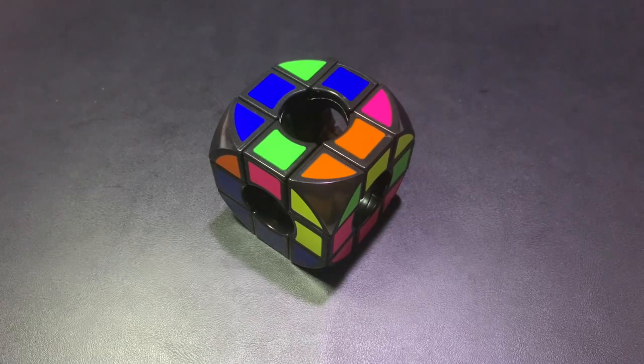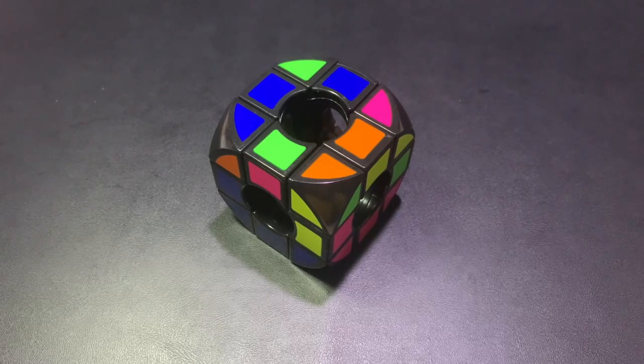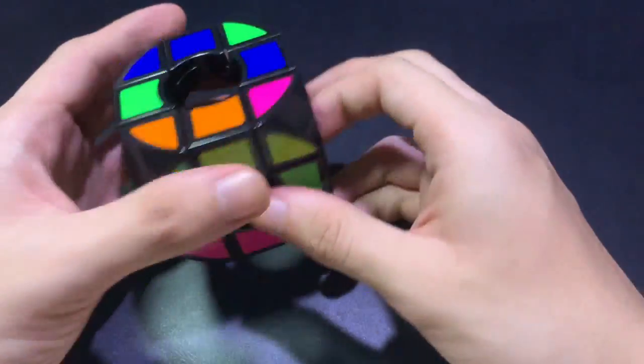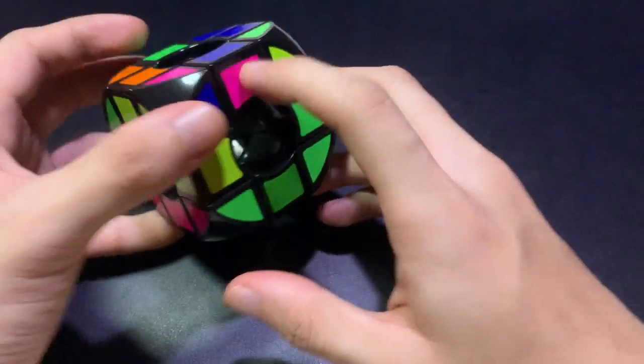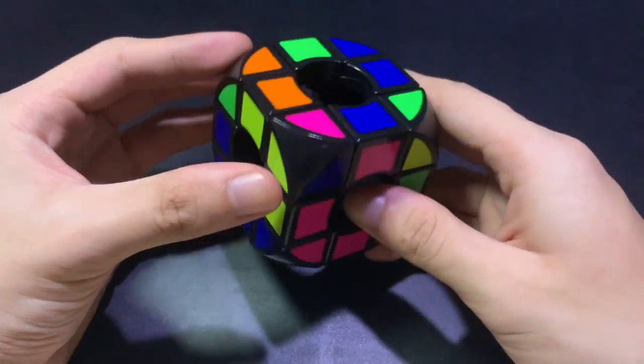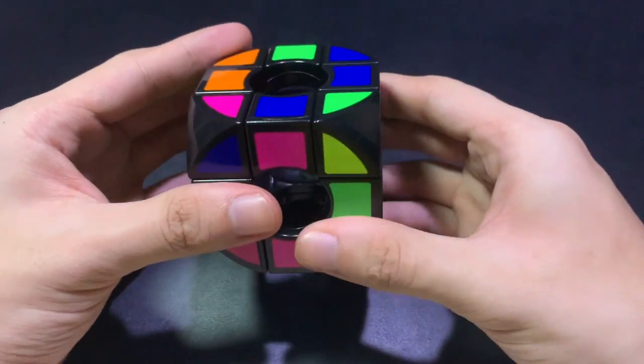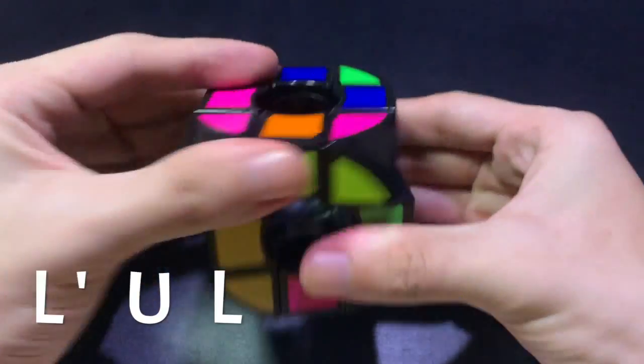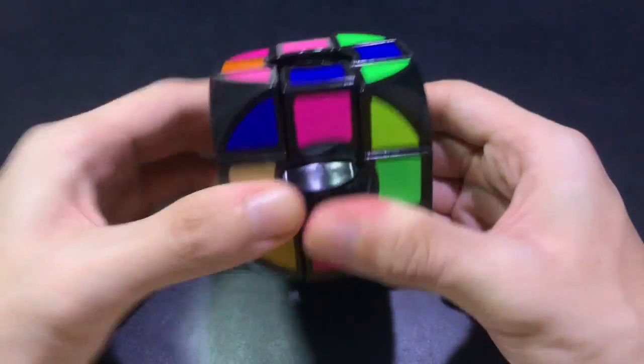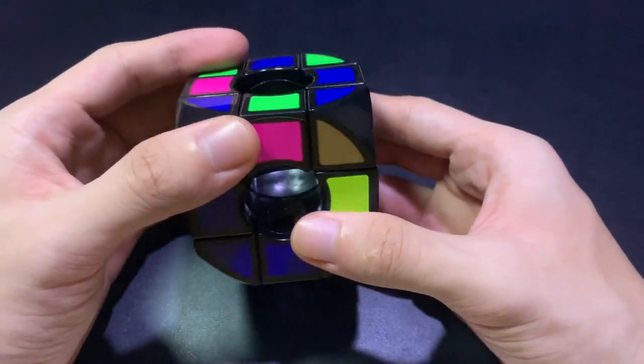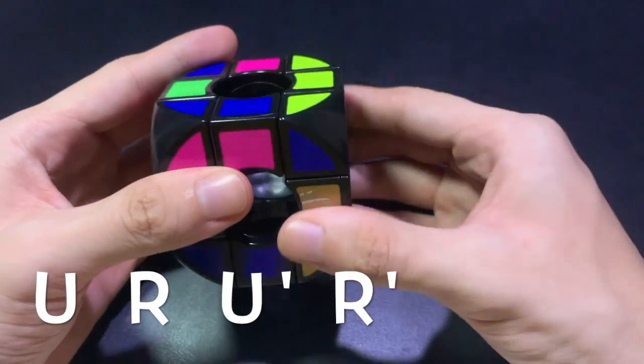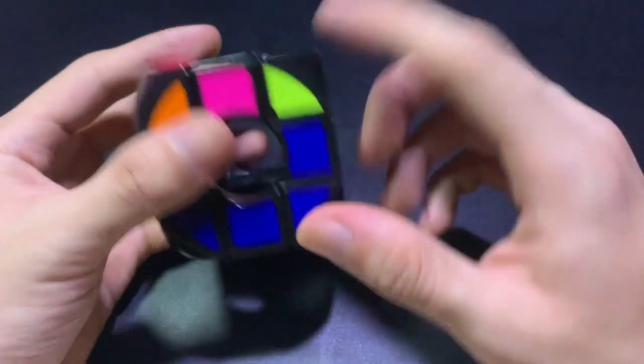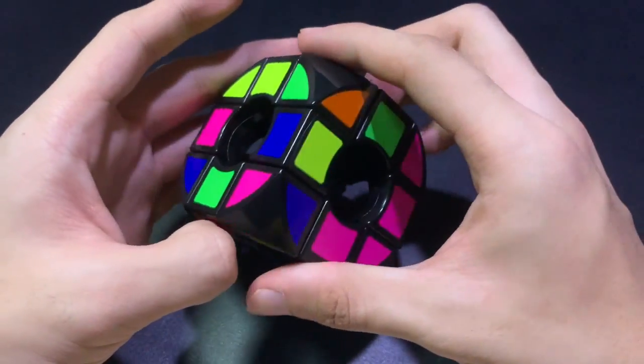So now let's go ahead and solve the second layer. So the formula for this is pretty much the same as the regular 3x3. So you can watch my video about it. So we need to look for the blue, pink. It's over here. So since pink is on the bottom, we need to make the bar and check the top color. So it's blue. It is on the left side. So we need to put it on the right. So the algorithm would go as l prime, u, and l. And then we turn to the blue side. And then u, r, u prime, and r prime. So now we have blue, pink in its correct place. Let's go ahead and solve it for all the pieces as well.